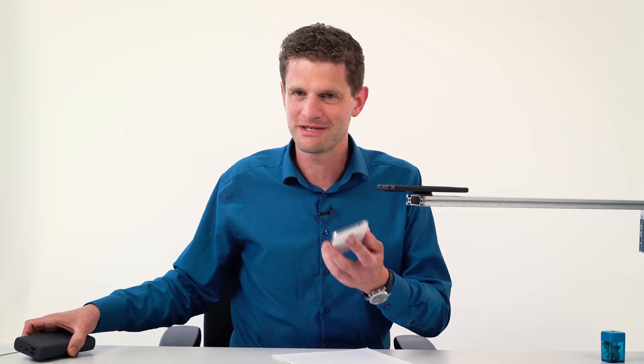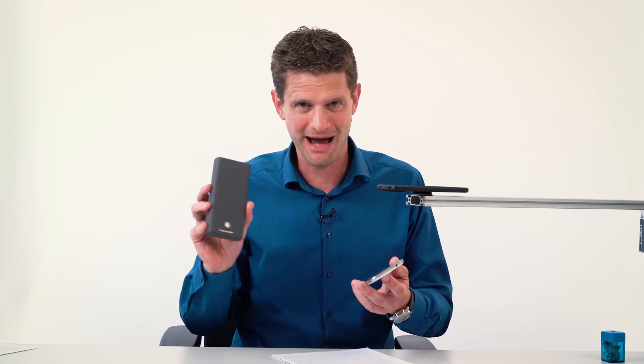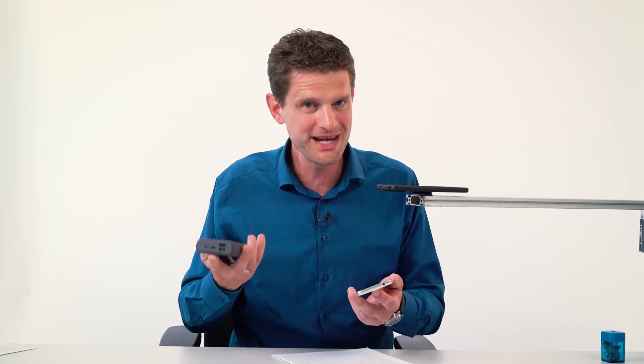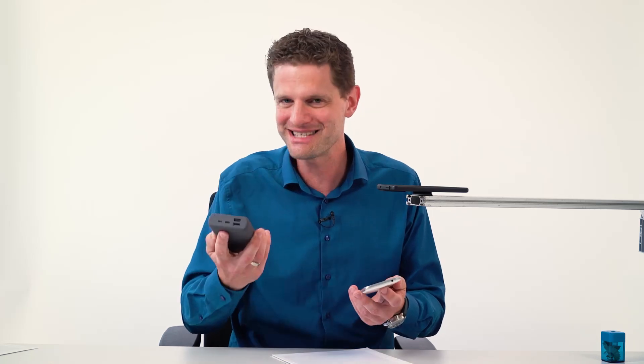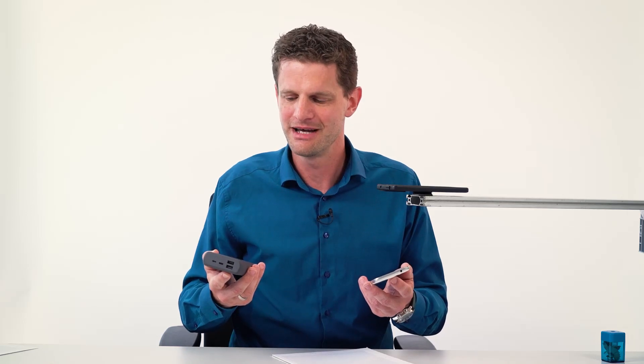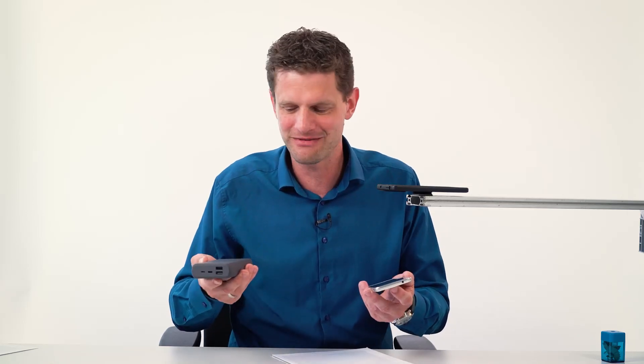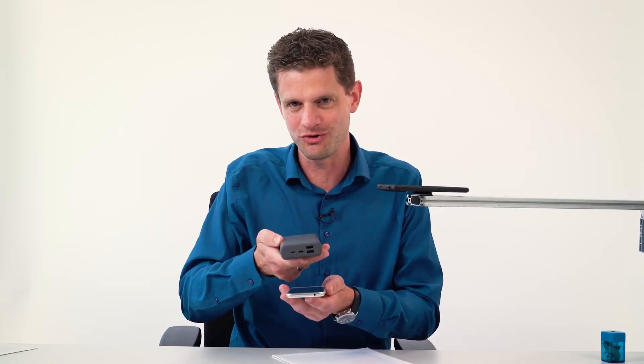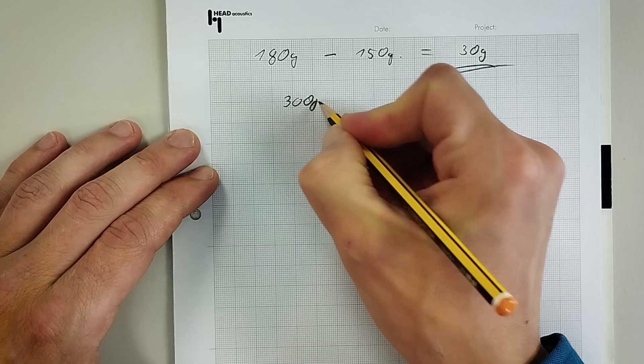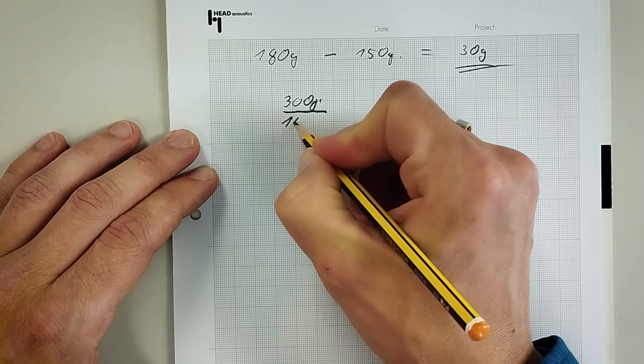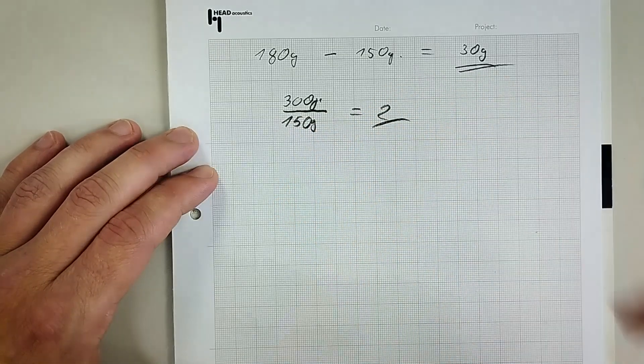If I compare the weight of the smartphone with maybe the weight of this power bank, which has a weight of 300 grams, I would say, well, it weighs twice as much. It has double the weight of the smartphone. So what I do, quite natively, I make a ratio between this weight and the other weight. 300 grams divided by 150 grams gives me a ratio of 2.